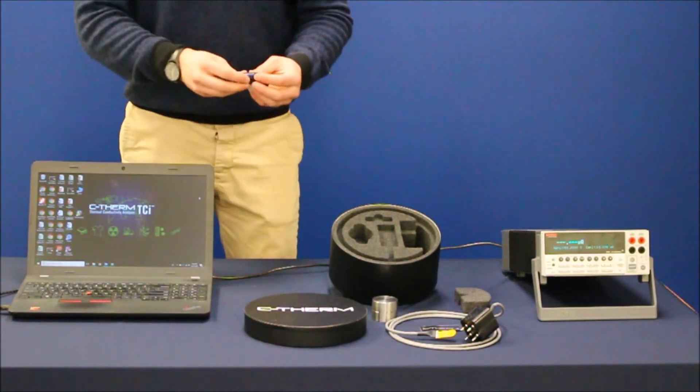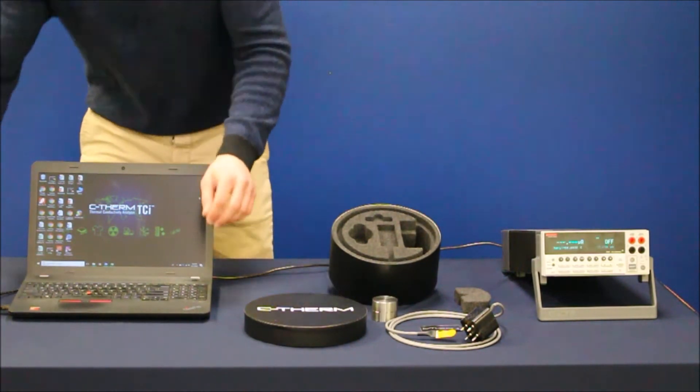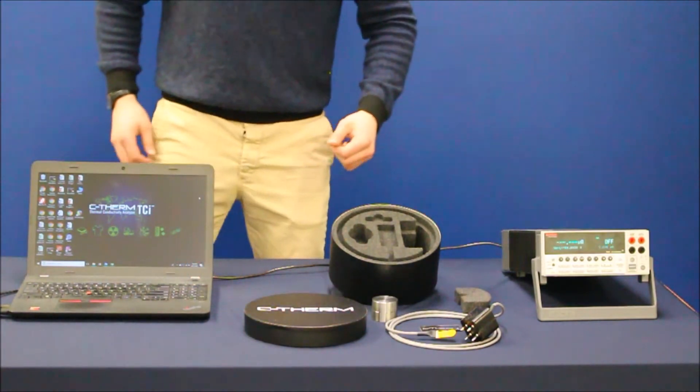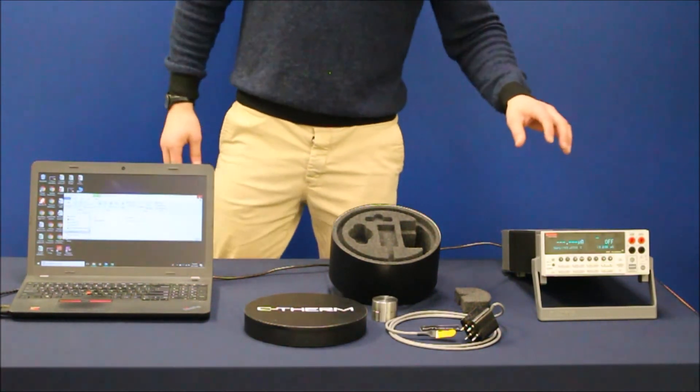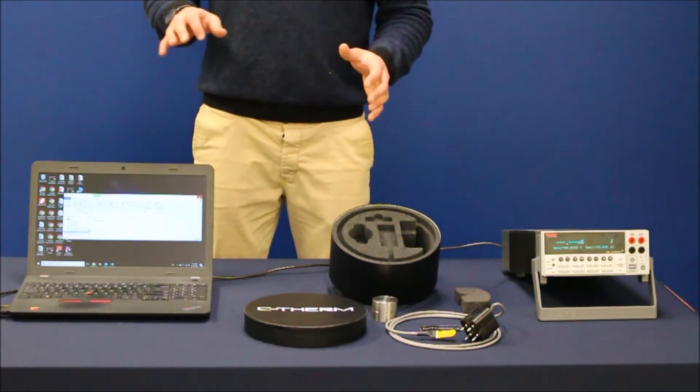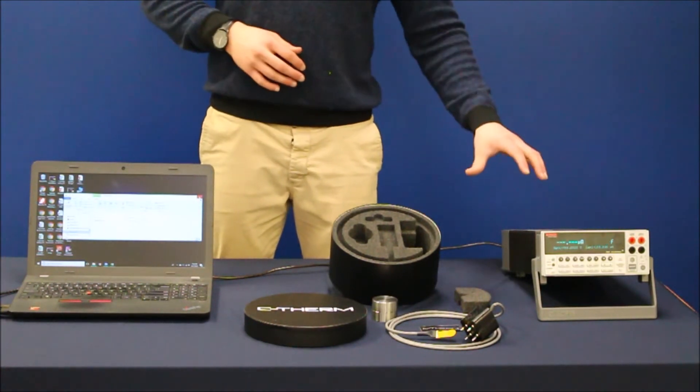Next you're going to want to take the included USB key, plug that into your PC, and carefully follow the instructions meant to configure communication for your source measure unit to interface with the software. Without this step, the software will not recognize your source measure unit.